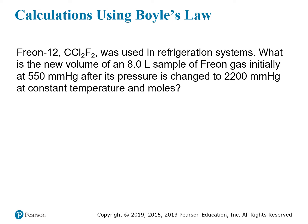Here's an example problem requiring a calculation using Boyle's Law. Freon 12, with formula CCl₂F₂ — one carbon atom bonded to two chlorines and two fluorines — is used in refrigeration systems. What is the new volume of an eight-liter sample of Freon gas initially at 550 millimeters of mercury after its pressure has changed to 2,200 millimeters of mercury at constant temperature and moles? This problem tells us the volume and pressure, the pressure has changed, and asks us to find the new volume with T and N constant — all clues pointing to Boyle's Law.